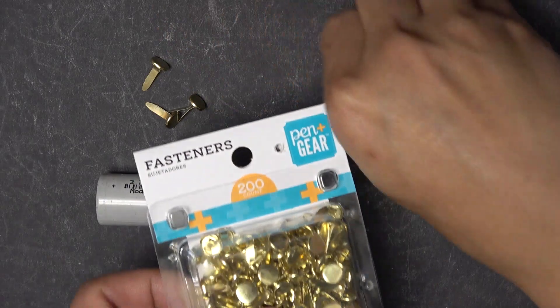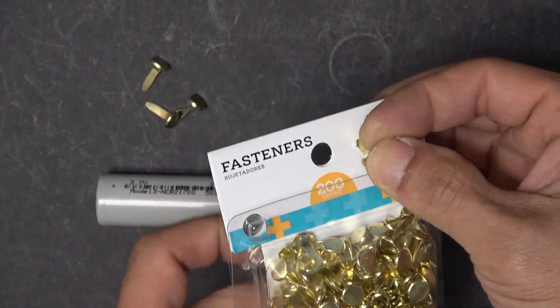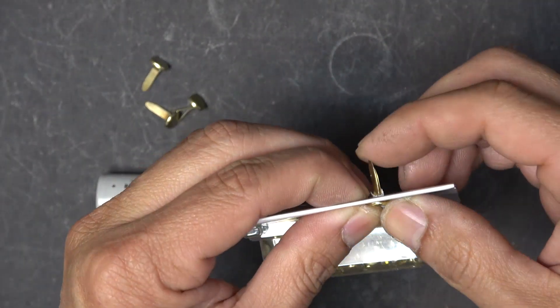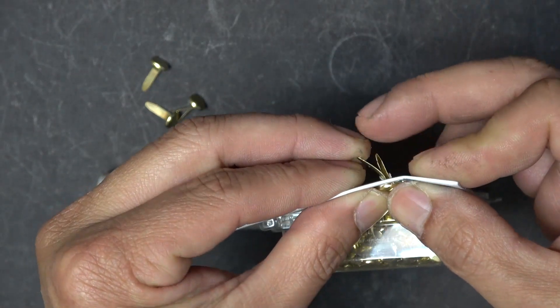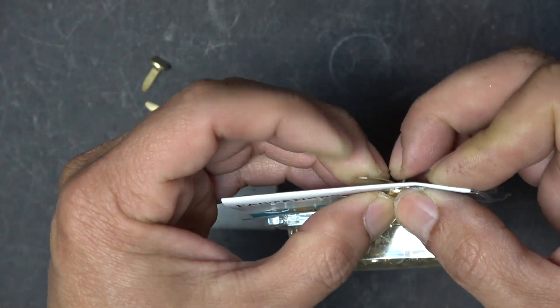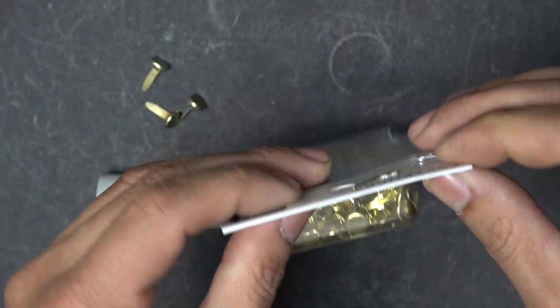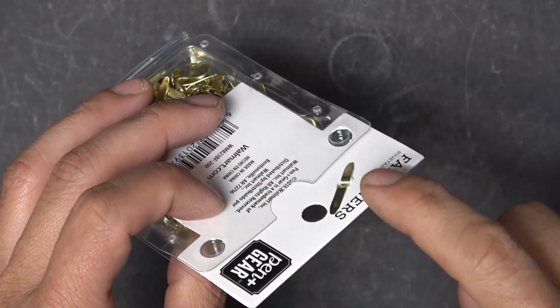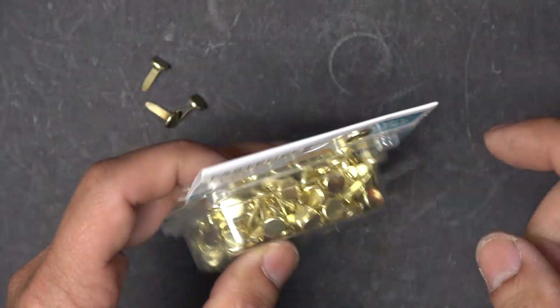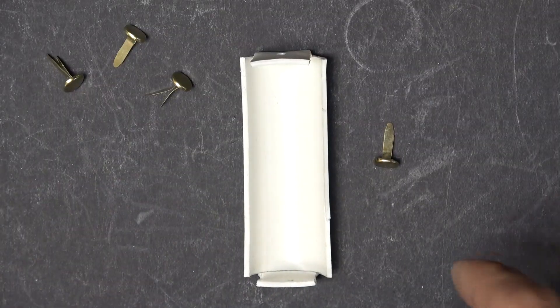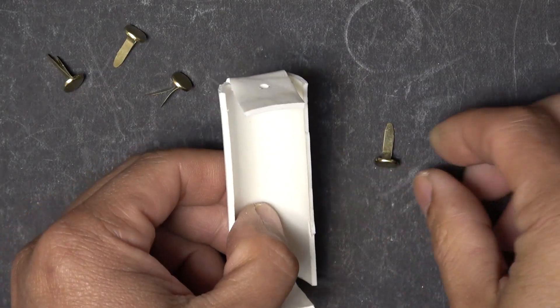You just have to thread it through a hole. Then on the back here it's got two legs, you bend the legs and spread it out, that's it. So now you just need to solder the wires to one of the legs here and you are done. All right, let's try and make a couple of battery terminals using these paper clips.